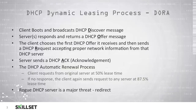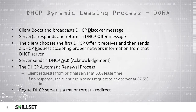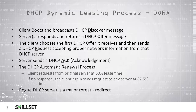The DHCP server issues the IP address for a certain amount of time, known as a lease. When 50% of the lease time expires, the client will contact the original server and request to renew its lease for the same IP address. If there is no response, the client will try again at 87.5% of its lease time remaining.